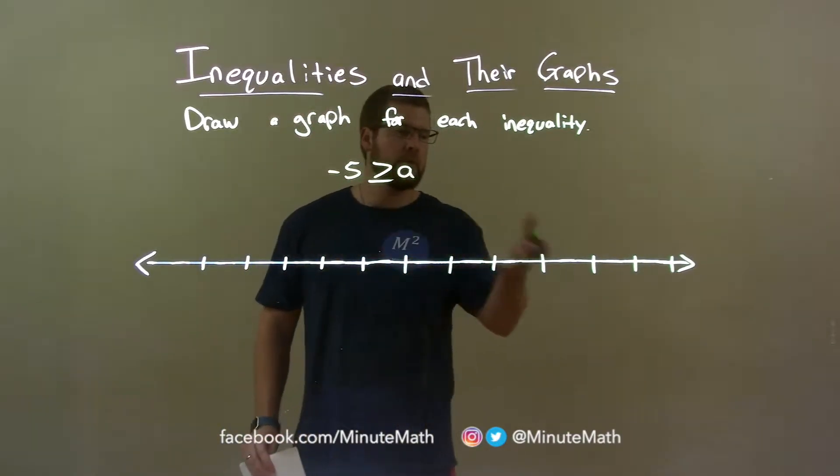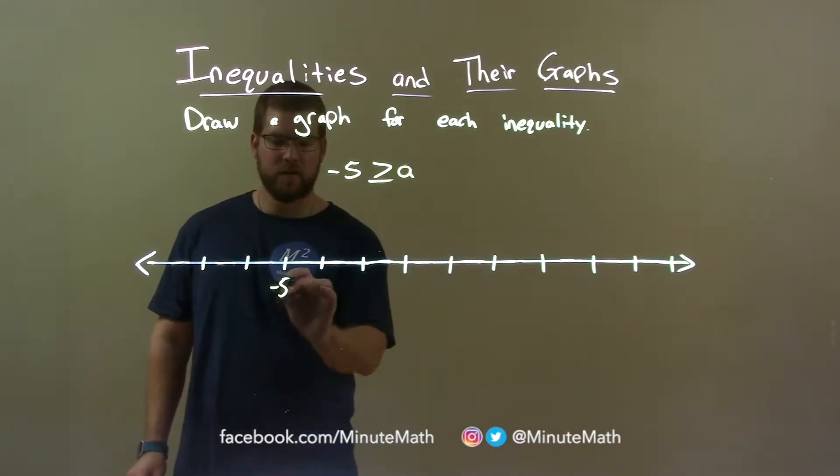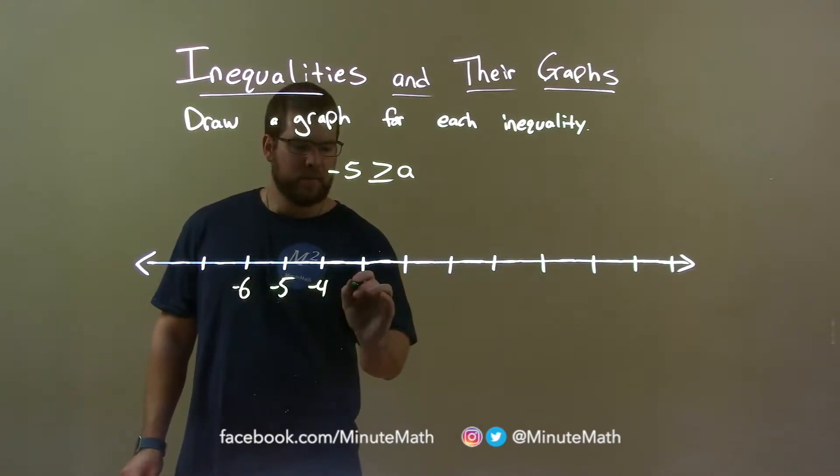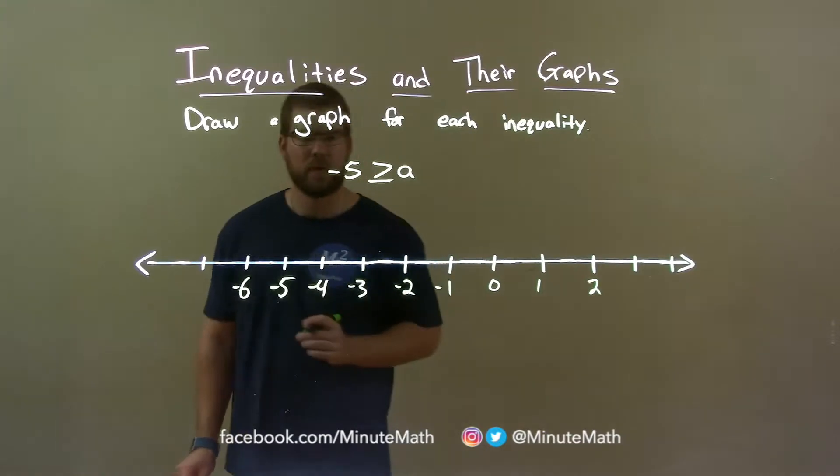Well we want to number our number line here and make sure we have negative 5 there. So we put negative 5 here and we have negative 4, negative 6, and negative 3, negative 2, negative 1, 0, 1, 2.